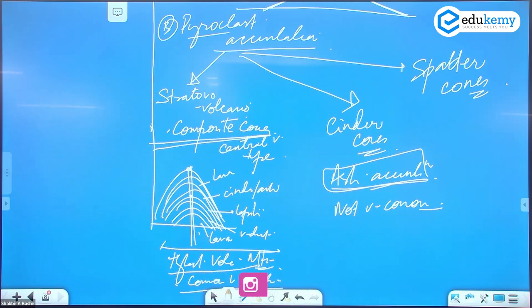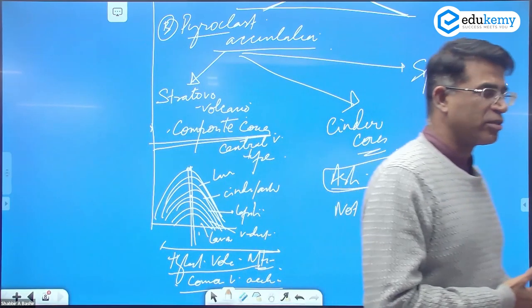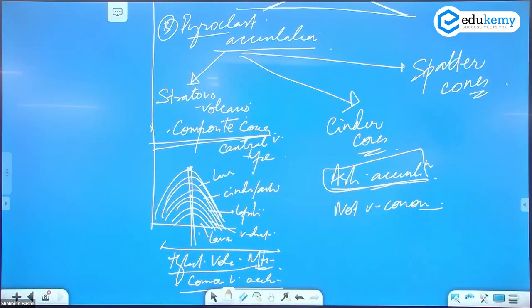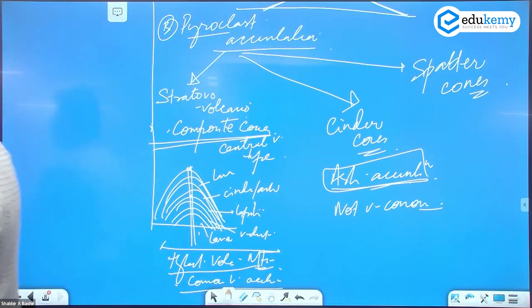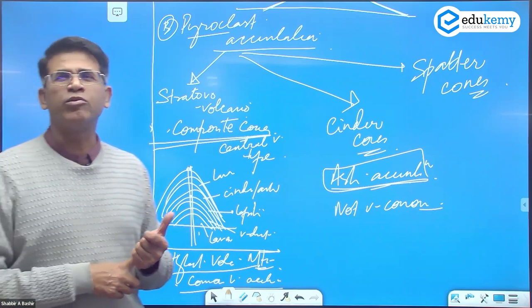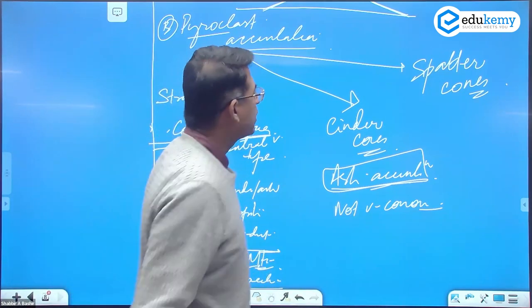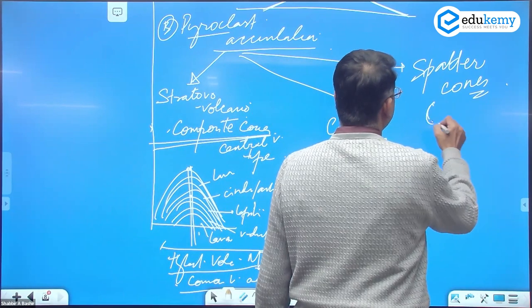So basalt moor ridge, basalt domal shields, basalt lava plateau, stratovolcanoes, cinder cones, and spatter cones, S-P-A-T-T-E-R, spatter cones. Just remember this, spatter cones, they're also found with hot spots like in Hawaiian Islands, spatter cones mein.